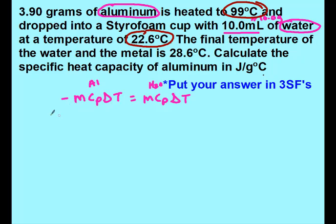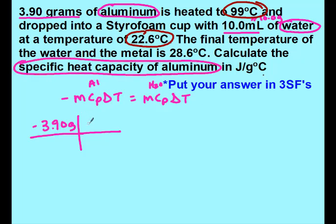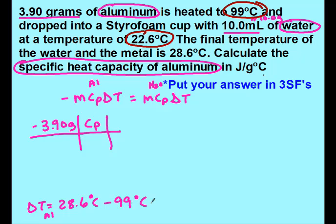Now I can start plugging in: 3.90 grams of aluminum, and I'm looking for the cp of aluminum. My delta T for aluminum — the final temperature of both is 28.6, so 28.6 minus 99. Remember, the final temperature is always the same for both substances because they keep transferring energy until they're both at the same temperature. Subtracting gives me negative 70.4 degrees Celsius. I would expect a negative because aluminum started at the higher temperature.